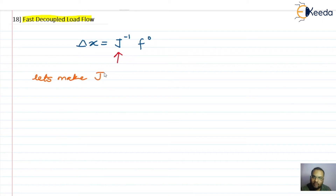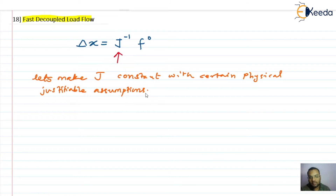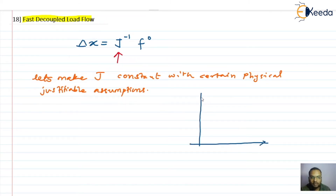We are going to make the Jacobian constant using certain physically justifiable assumptions. The very first thing is related to the relationship between real power and angle. In the previous lecture on the decoupled method, we looked at the real power versus angle graph. Let us have a quick discussion here.